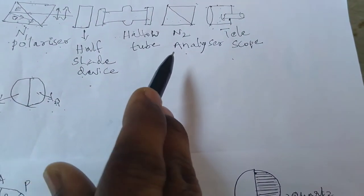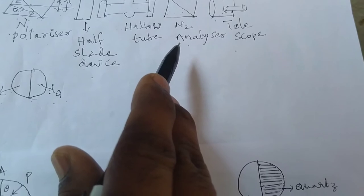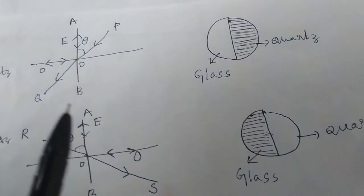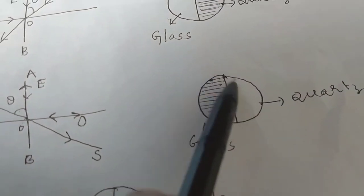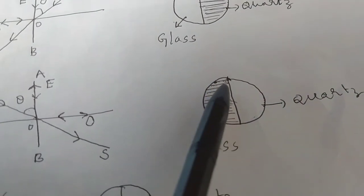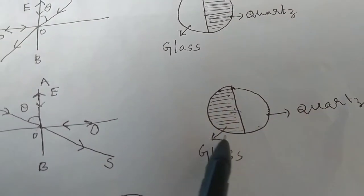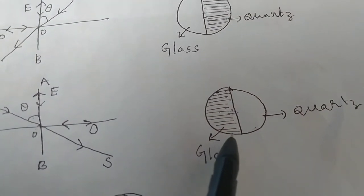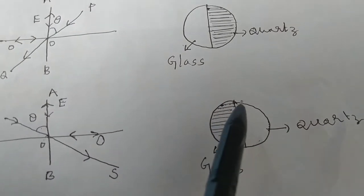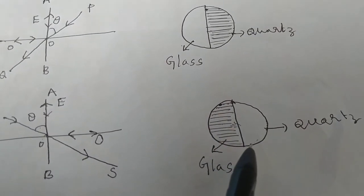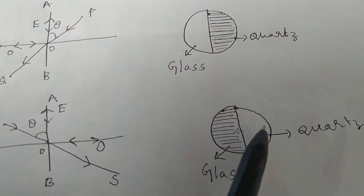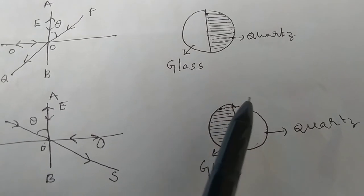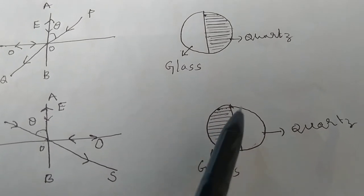The combined components move in the OS direction, which is parallel to the principal section of the analyzer. By adjusting it, you will find that the quartz part is bright and the glass part is dark — the semi-circular quartz part is bright. The light is completely distributed here, which is why this part is bright.